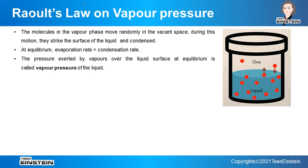Raoult's Law on vapor pressure: molecules in the vapor phase move randomly and strike the liquid surface, where they can condense. At equilibrium, the rates of evaporation and condensation are equal. The pressure exerted by vapor over the liquid surface at equilibrium is called vapor pressure. With increasing temperature, the rate of evaporation increases and vapor pressure rises.